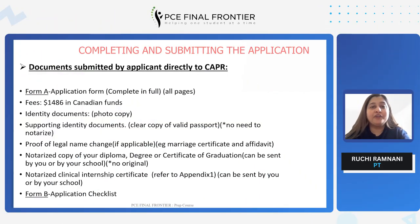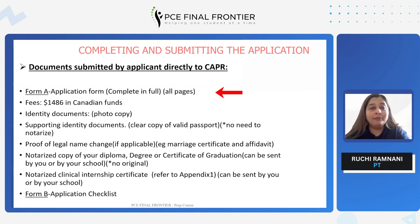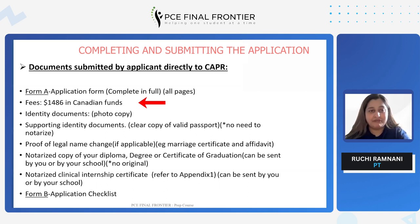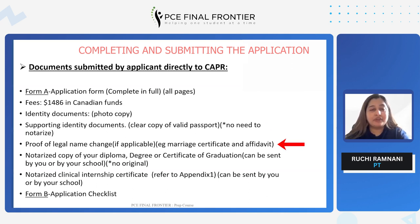There are several documents that need to be submitted by the applicant directly, some by your school, and some by your university. The first form is Form A, which is also known as the application form. It needs to be completed in full by the candidate. The fees should be exactly in Canadian funds of $1,486. You will have to mention your credit card details if paying by credit card on the form itself. Along with this form, attach your identity document — make sure it's a photocopy, not the original. You would submit all your supporting identity documents with this application package, and a proof of legal name change if applicable.